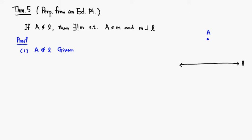Let's look at theorem 5, perpendicular line from an external point. It says this: if A is a point outside of the line L, so it's an external point, then there exists a unique line M such that the line goes through A and also line M is perpendicular to given line L.